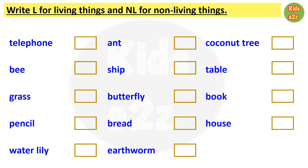In this worksheet, a list of different things are given and kids need to write NL beside non-living things and L beside living things. Beside telephone they need to write NL, then ant — living thing, coconut tree — living thing. Beside pea they need to write L, then sheep — living. Table, book, pencil, bread, and house are non-living things.